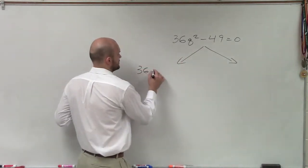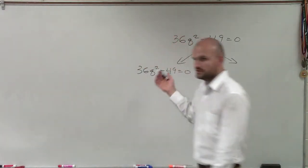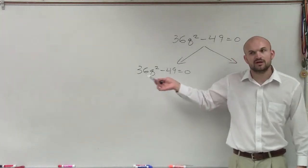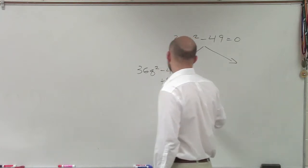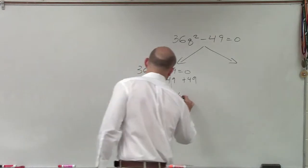So if I have 36 q squared minus 49 equals 0, just use inverse operations. Undo everything that's happening to the q. First thing I always want to do is addition and subtraction. So I add 49 to the other side. That adds up to 0. Then I'm left with 36 q squared equals 49.